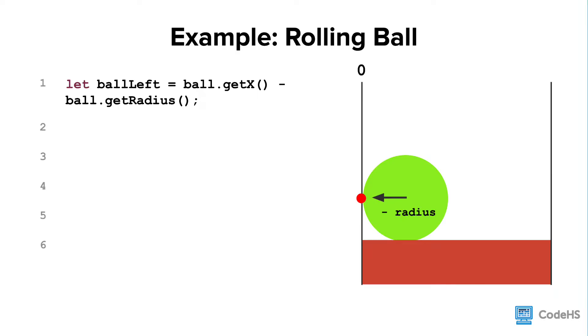And similar to before, we want to compare this value to the left side wall, which has an x coordinate of 0. So we say, if the left side of the ball is less than or equal to 0, then bounce back.